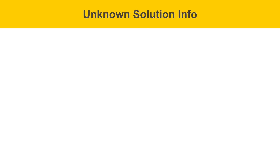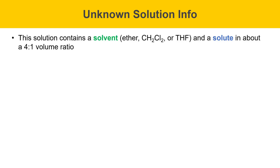Here's some information on the unknown solution. The solution contains the solvent, and that'll either be ether, dichloromethane, or tetrahydrofuran, and these two are present in about a 4 to 1 volume ratio with the solvent being present in much larger quantity.